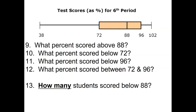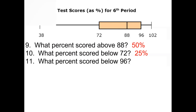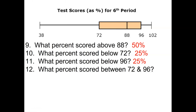What percent scored above 88? There's 25% in that box and 25% in that whisker, so 50%. What percent scored below 72? That is this long whisker, so 25%. What percent scored below 96? There's 25% in each box and 25% in the whisker, so 75%. What percent scored between 72 and 96? That's the middle 50%, so 50%.